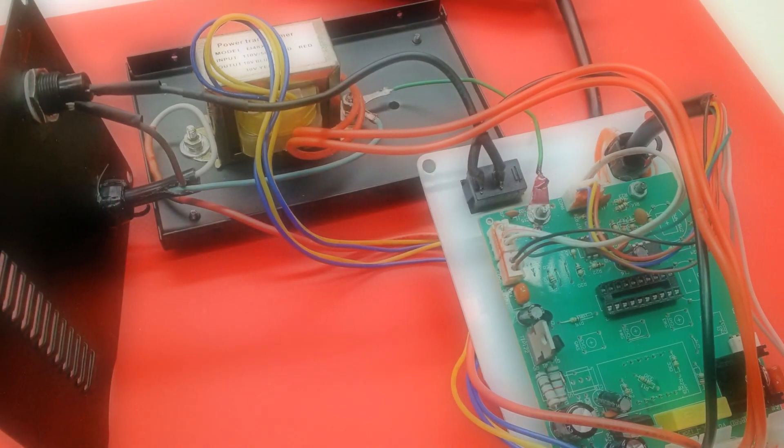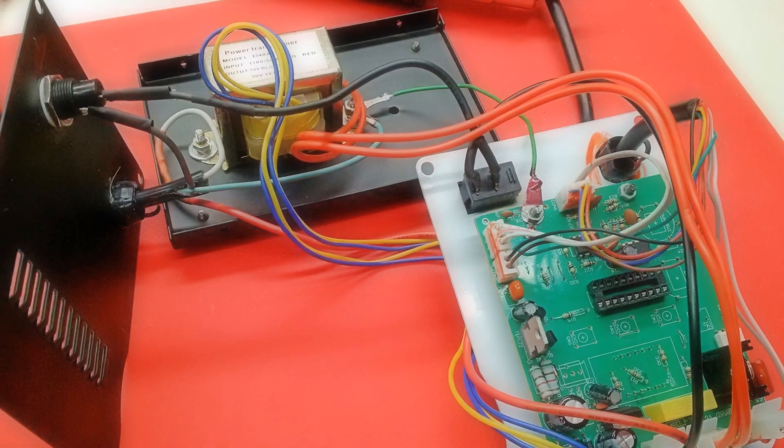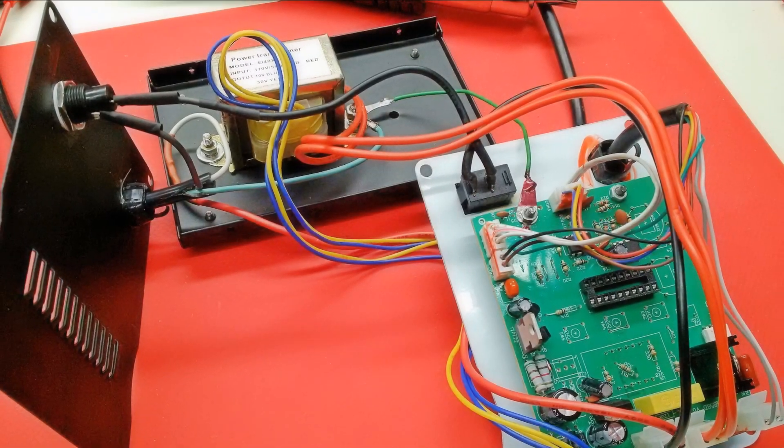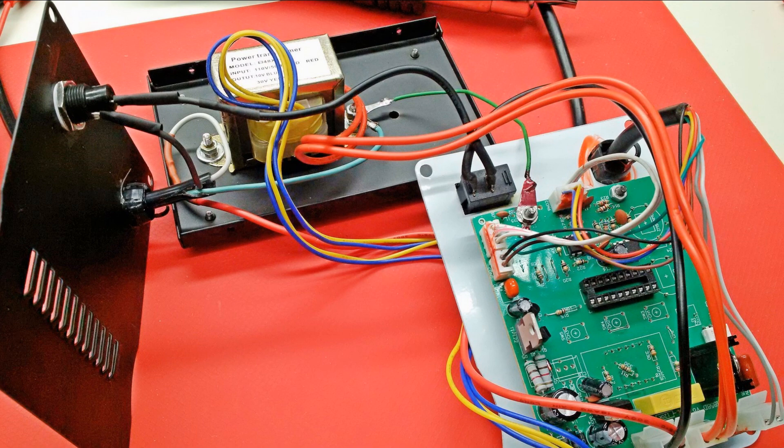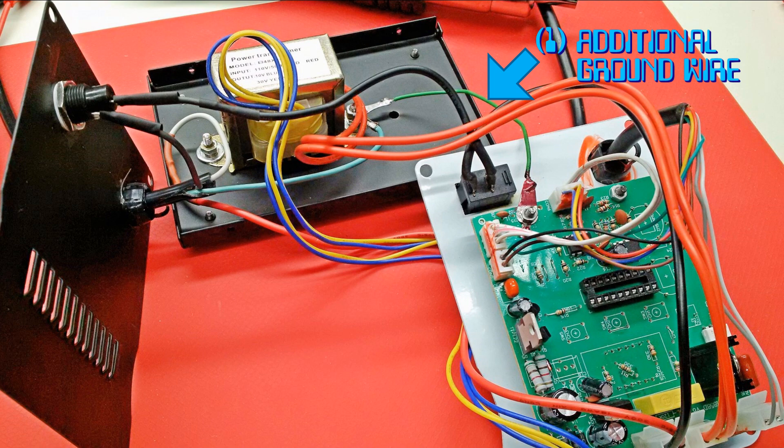So to recap what was accomplished here, I think we've made this 858D hot air rework station a little bit safer by applying three simple modifications. First, we properly grounded the metal blower tip to mains earth by adding a short additional ground wire from the PCB ground point, where the blower handle ground wire terminates, over to where the transformer is bolted to the chassis and where the mains ground wire is connected.